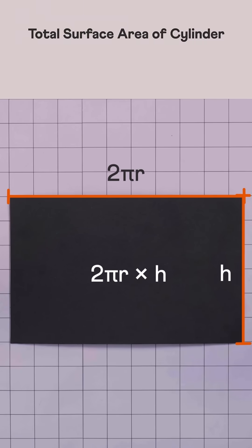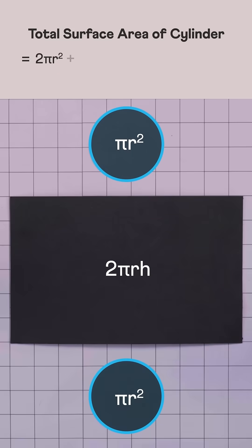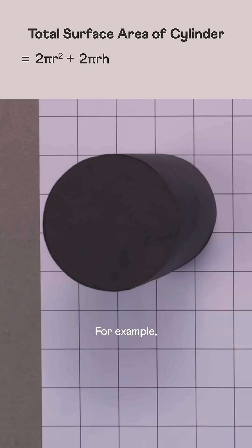So the total surface area of any cylinder is the area of the two circles plus the curved surface area. For example,